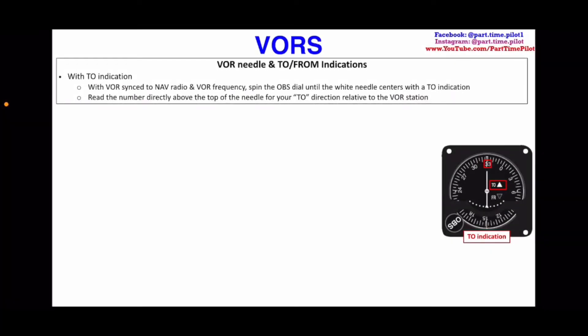Hey guys, welcome. We're continuing our conversation about VORs. In my last video, we talked about the components of a VOR system, how the VOR works to send out signals to your aircraft, how your aircraft determines a relative position to the VOR and displays it on the instrument, what the different things on the instrument face mean, and how to dial in to your VOR using your nav radios and the OBS. So now let's get into what the TO/FROM means and how to determine your relative position with the information you have on the face of the VOR.